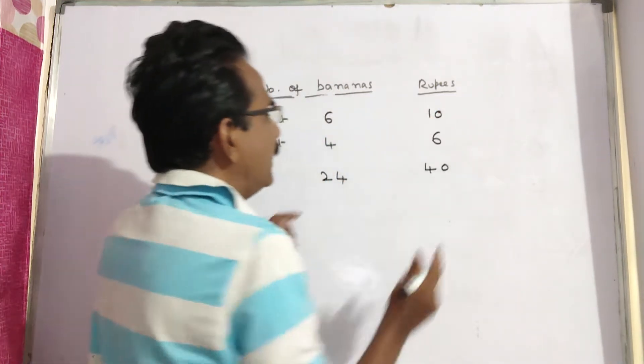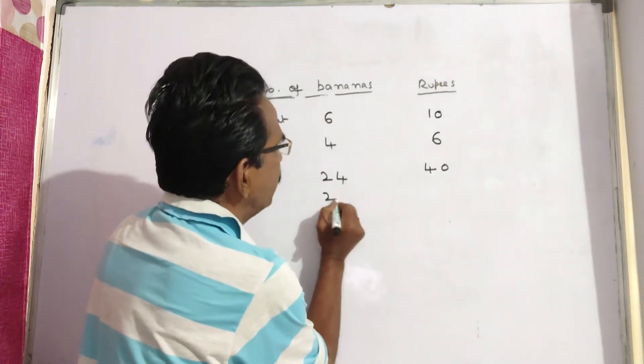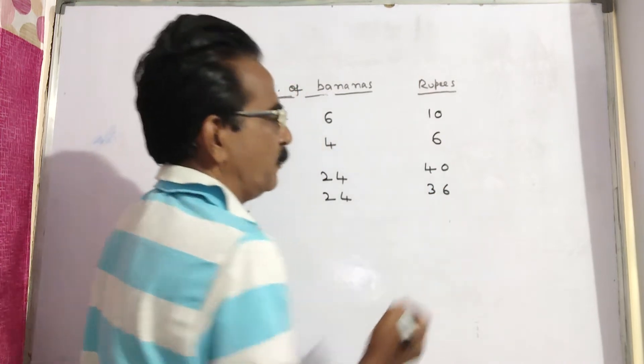40 rupees. Let us multiply the second statement with 6: 6 fours, 24 bananas at 36 rupees.